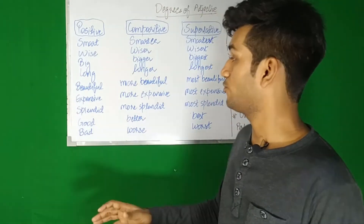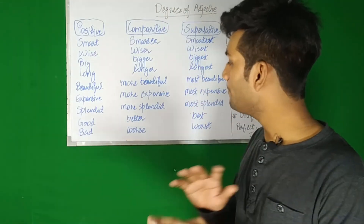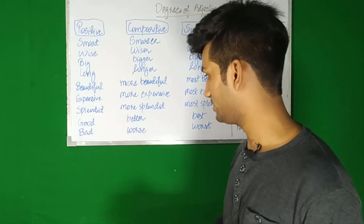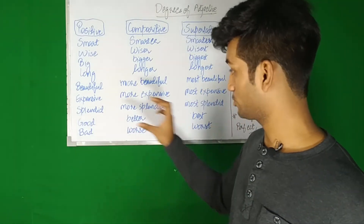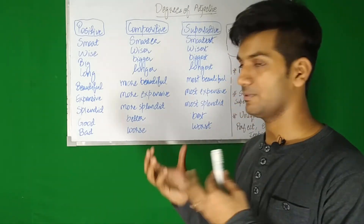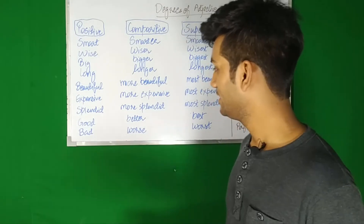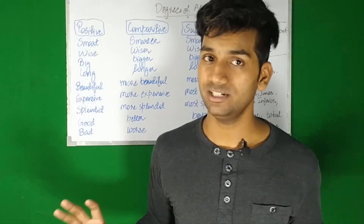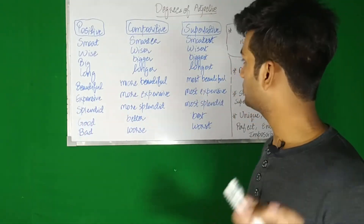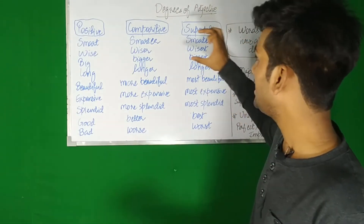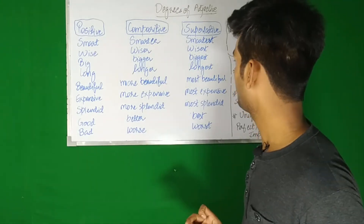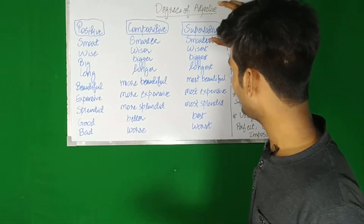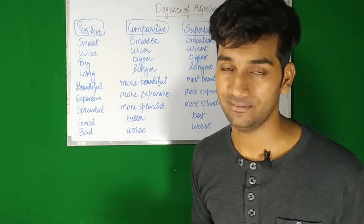There are some words that do not follow any pattern at all. Good, better, best. Bad, worse, worst. Less also follows a different pattern. Not 'more good' or 'most good' - never do that. These are irregular adjectives. Also, it's a rule: before a superlative degree of an adjective, we always use 'the.' 'He's the smartest person in his class.' 'You are the most beautiful girl.' We always use 'the' before a superlative degree.